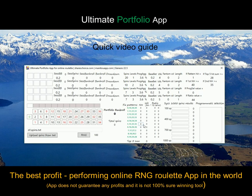The app consists of four systems, so every line is one independent, non-correlated system with its own conditions and independent money management. This is the key layout. This field shows the portfolio bankroll — it's a sum of all the bankrolls from all four systems.